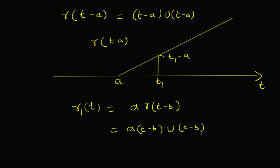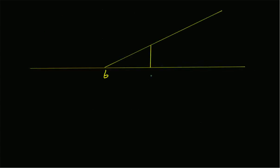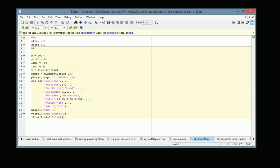In other words, the signal starts at b and the value at any given point t1 is given by a times (t1 minus b). That is the nature of a scaled and shifted ramp signal. Now let us verify all these things in MATLAB.